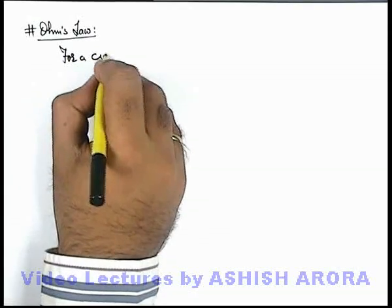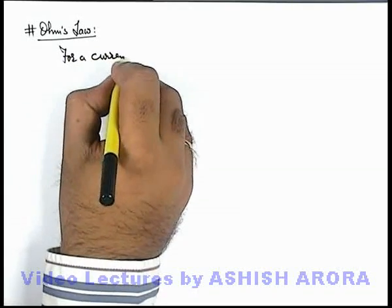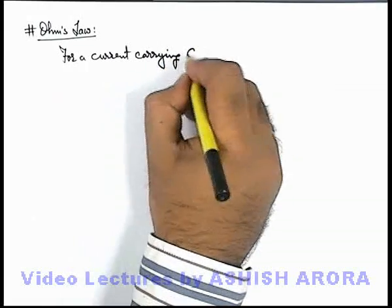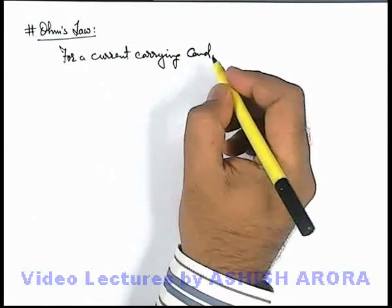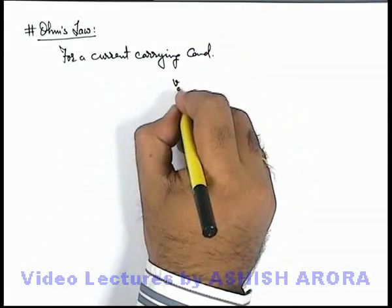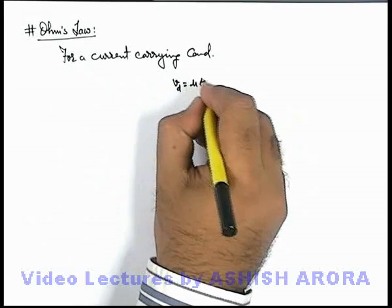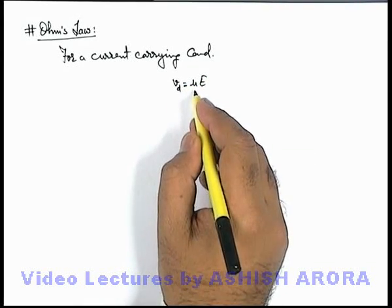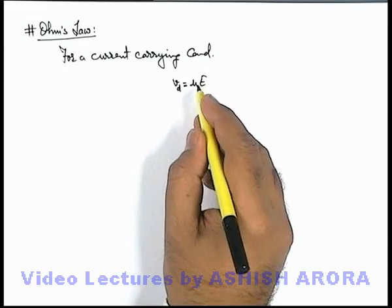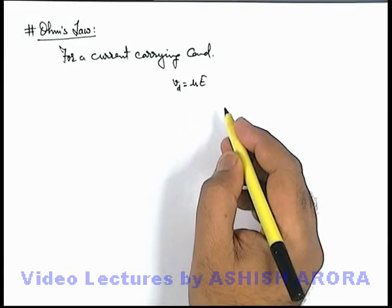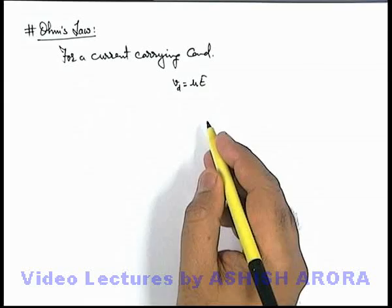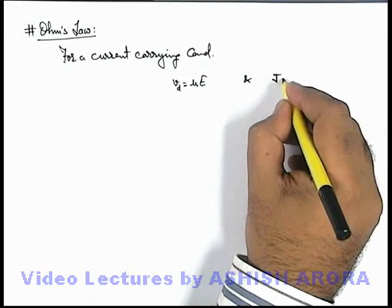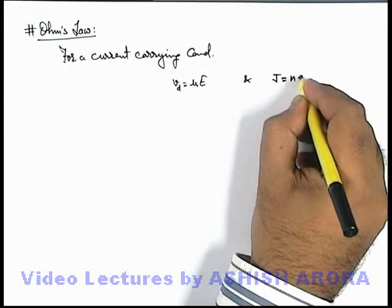For a current-carrying conductor, we have discussed that the free electrons of the conductor travel with the drift speed given as v_d = μE, where μ is the mobility of electrons which depends on temperature as well as on the lattice parameters of the metal in which the current is flowing. We have just now discussed that current density in the conductor can be written as J = nEv_d.